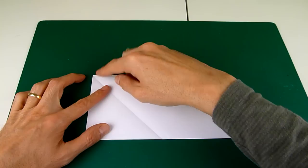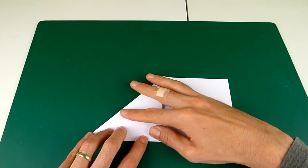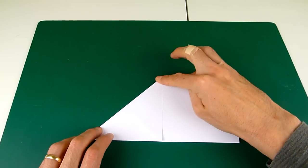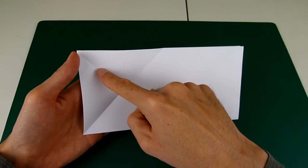Take this corner down to meet the bottom edge. And then unfold it again, and now you'll have this cross-shaped crease here.